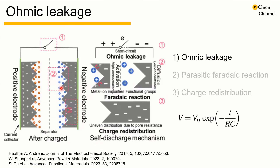Ohmic leakage arises from the resistive pathways between the positive and negative electrodes, and the voltage drop can be described by the following equation. Here, V0 is the initial voltage, T is delay time, and RC is the time constant representing the resistance. The self-discharge rate depends on the resistance of the ohmic leakage and the capacitance of the electrical capacitor, and results in a linear profile when plotted as the logarithm of potential versus time. Ohmic leakage is the least discussed among the three types, since it is related to the configuration of the cell.